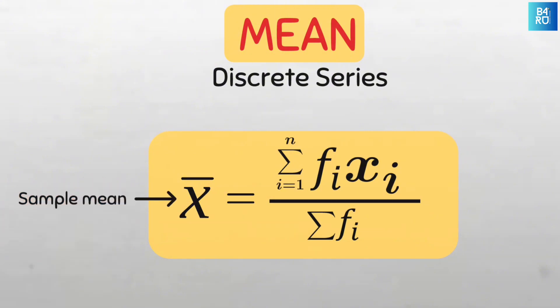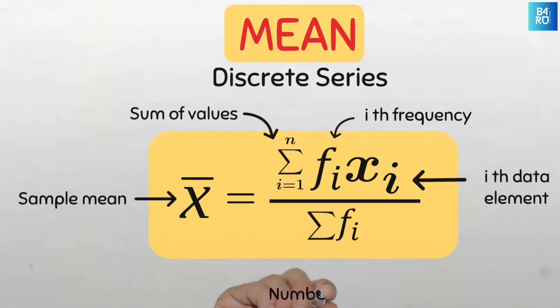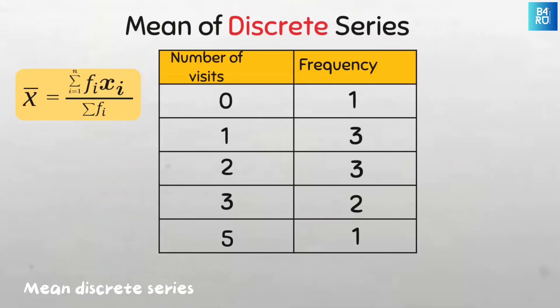Here x̄ is the symbol for the mean of the sample. Sigma i equals 1 to n is the sum of all the values from the first to the last. f sub i is the value of each frequency, i.e., the frequencies of the index data values. x sub i is all the index data elements, and sigma f sub i is the sum of all the frequencies which is the same as the sample size. So let us use this formula to find the mean of this data.